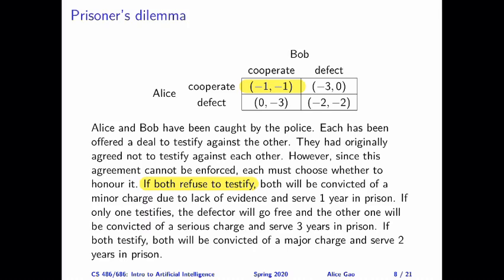In the second case, one person testifies against the other and the other person does not. The person who defects — who testifies — goes free, which is part of the deal. The other person will be convicted of a serious charge because all the evidence is now against them. So one person goes free with utility zero, and the other has to serve three years in prison, represented as minus three.